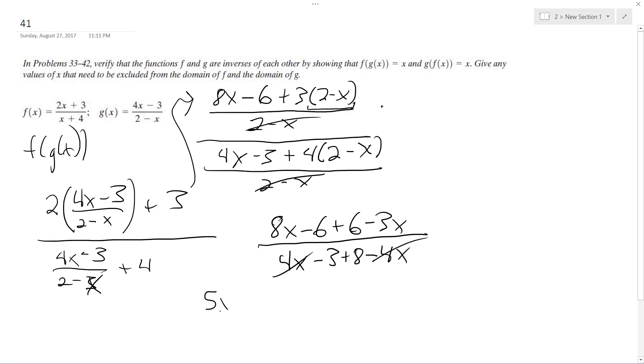So this becomes 5x, 6's cancel out, and this becomes 5. Oh hey, and this becomes x. Hey, that worked out nice. Well, that's what we're supposed to get because it's assumed it's probably going to be trying to prove it's an inverse.